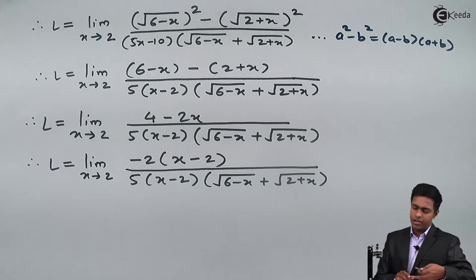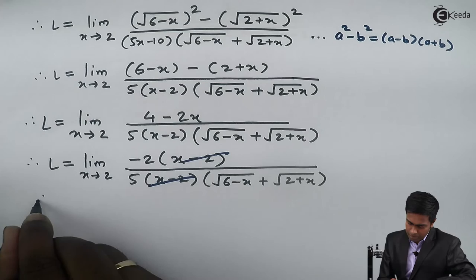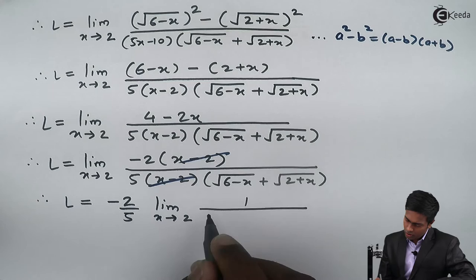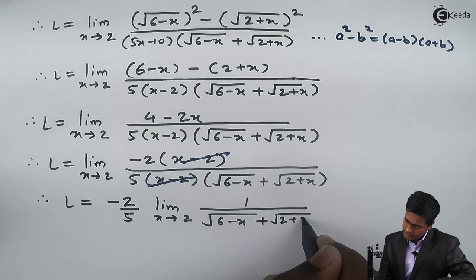After cancelling (x minus 2), this limit becomes minus 2 upon 5, outside the limit x tends to 2 of 1 upon [√(6-x) plus √(2+x)].